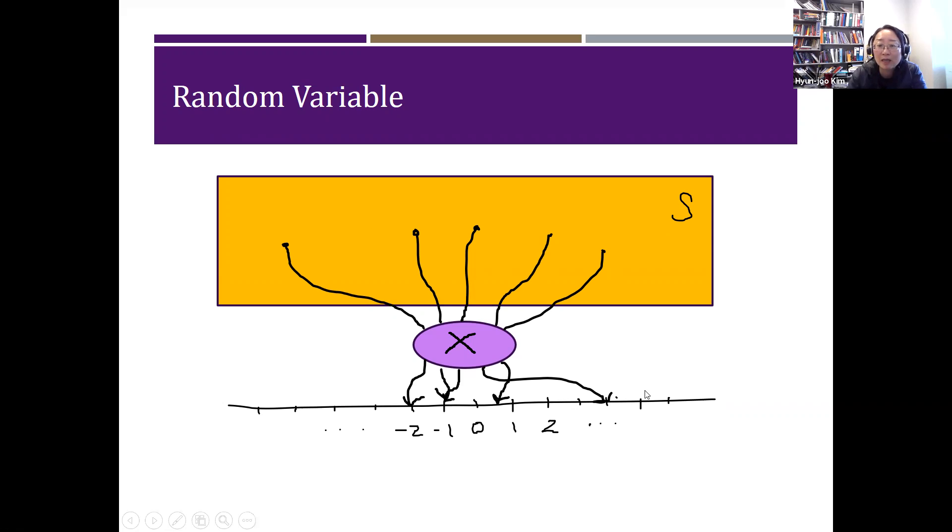Depending on the possible values for X, whether it's discrete numbers or continuous numbers, we call it a discrete random variable X or a continuous random variable X.